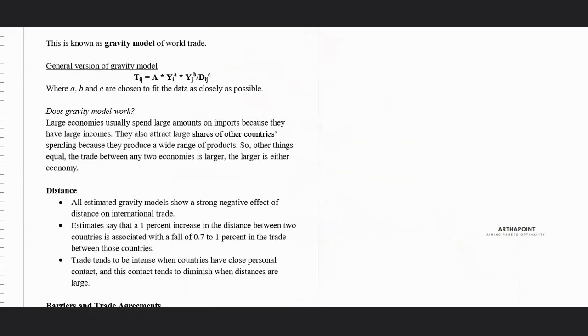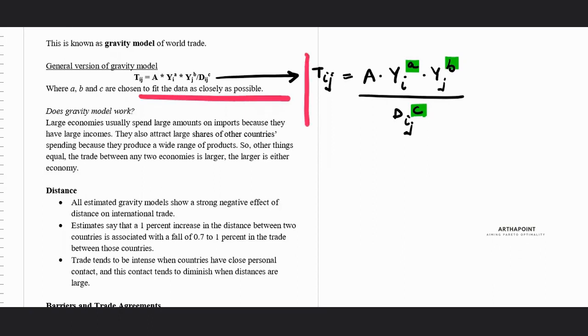So this model, we call it as the gravity model. Now for the general version of the gravity model, we say that we can actually write this as TIJ equals A times YIA times YJB upon DIJC, where ABC are basically the values which are chosen that fit the data well. So this is done using econometrics regression. You just have to understand that this is a simple model which says that trade directly depends on GDP of the two countries and inversely on the distance between the two countries.